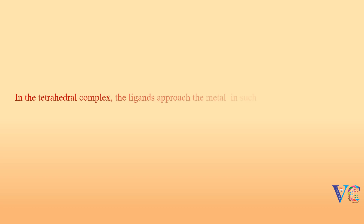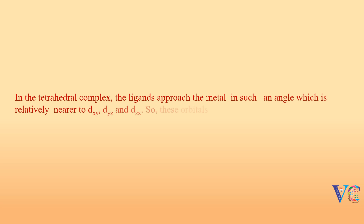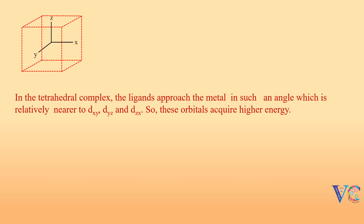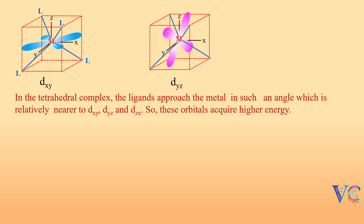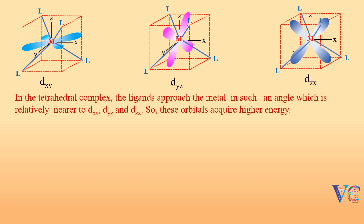In the tetrahedral complex, the ligands approach the metal through such an angle which is relatively nearer to dxy, dyz, and dzx. So these orbitals acquire higher energy. While the electrons in the dx²-y² and dz² experience less repulsions, thus acquire less energy.